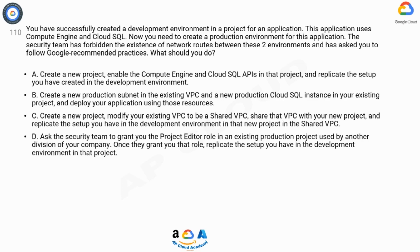A. Create a new project, enable the Compute Engine and Cloud SQL APIs in that project, and replicate the setup you have created in the development environment. B. Create a new production subnet in the existing VPC and a new production Cloud SQL instance in your existing project, and deploy your application using those resources.